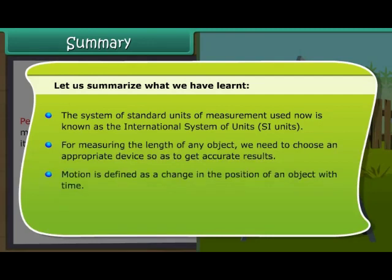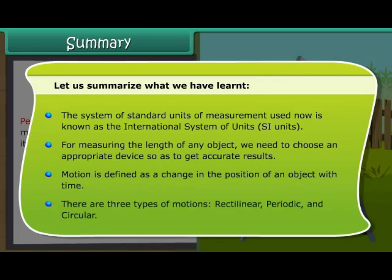Motion is defined as a change in the position of an object with time. There are three types of motions: Rectilinear, periodic and circular.